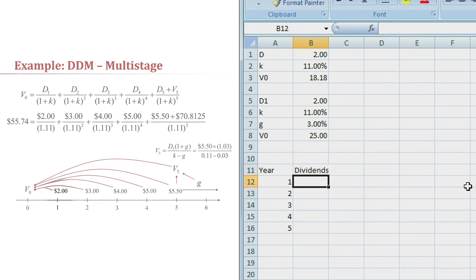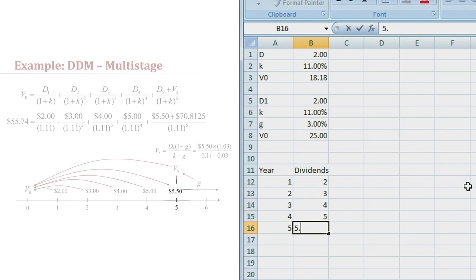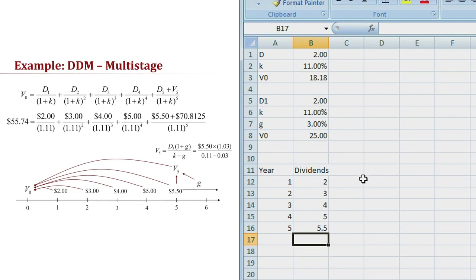So we'll start out in year 1 with a dividend of $2, in year 2, $3, in year 3, $4, in year 4, $5, and then our $5.50 dividend in year 5. Again, I'm going to just format those to express those as dollars and cents.